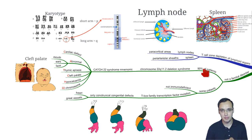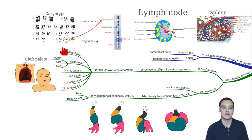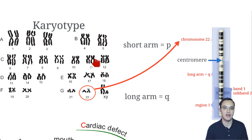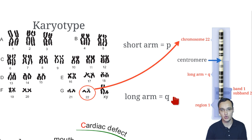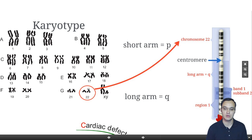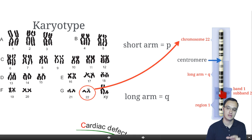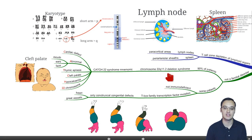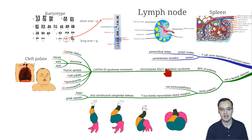90% of the patients will have chromosome 22q11.2 deletion syndrome. In the 22nd chromosome, you have a short arm, a centromere, and then a long arm. The long arm is abbreviated as Q and the short arm as P. This chromosome 22 will have, in the long arm Q, region 1, band 1, subband 2 — giving the designation 22q11.2. You delete that part of the chromosome, and then you get DiGeorge syndrome.